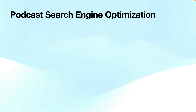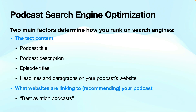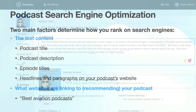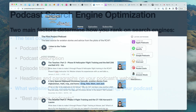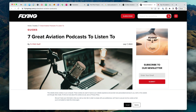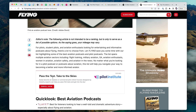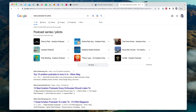When it comes to podcast search engine optimization, there are two main factors that determine how you rank on search engines. The first is your text content — what text and keywords are in your podcast title, podcast description, episode titles, headlines, and paragraphs on your podcast's website. The second ranking factor is what websites are linking to or recommending your podcast. For example, if an aviation magazine has a list of the best aviation podcasts and they link to your podcast website, that would help boost your result in the rankings.